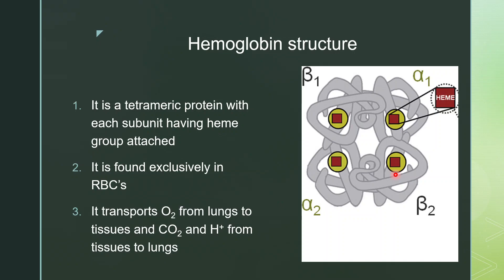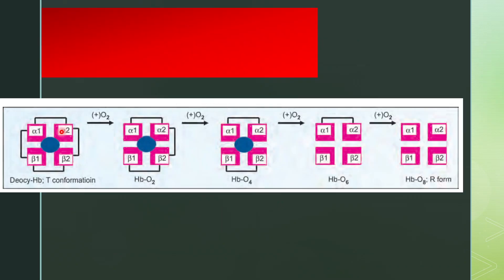The function of hemoglobin is to transport oxygen from the lungs to tissues and carbon dioxide and hydrogen from tissues to the lungs. The hemoglobin molecule consists of four polypeptides — alpha 1, alpha 2, beta 1, and beta 2 — each having a heme group. These four polypeptides are attached by various bonds called salt bridges; for example, alpha 1 and alpha 2 are attached by a salt bridge, and alpha 2 and beta 2 by another bond.